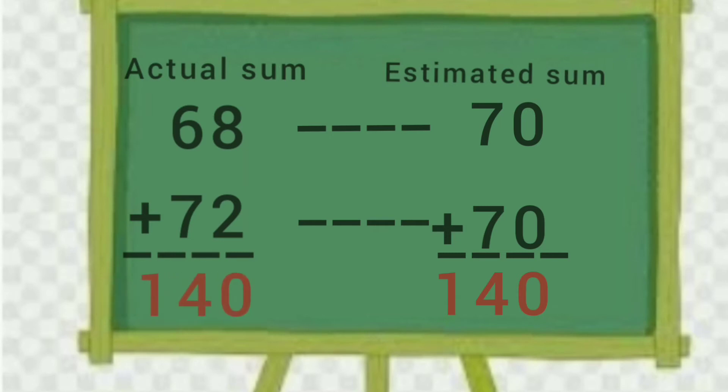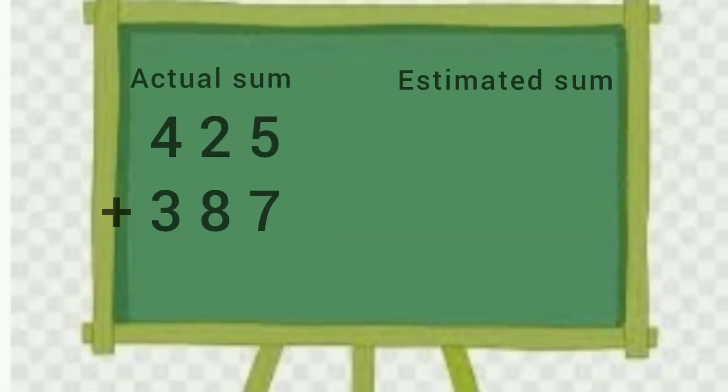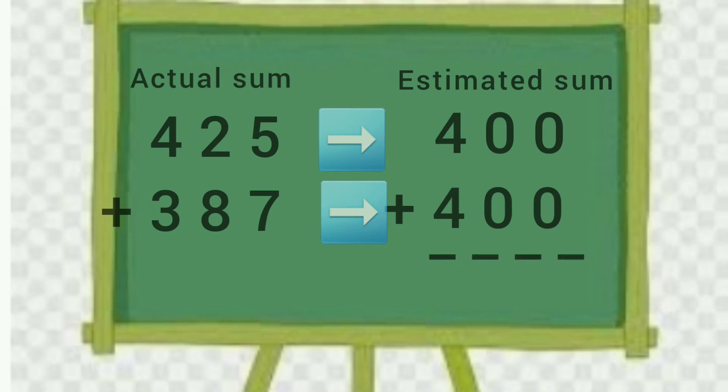Now let us take another example, 425 plus 387. 425 will be rounded down to nearest 100 and it will be 400, and 387 will be rounded up to nearest 100 and it will be 400. Now let us add and find the estimated sum of 400 plus 400, and it will be equal to 800.